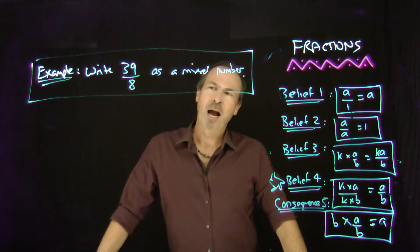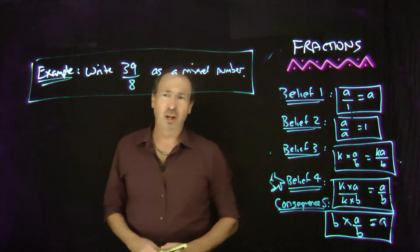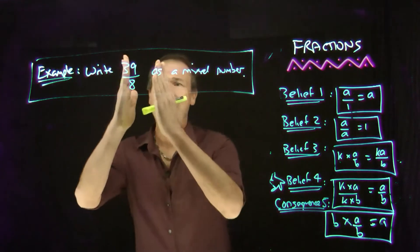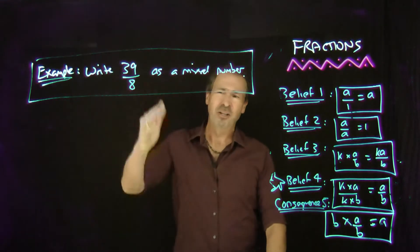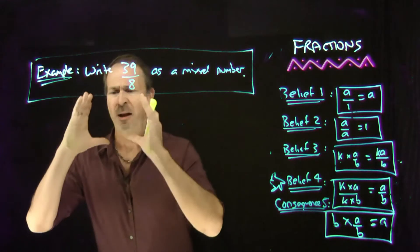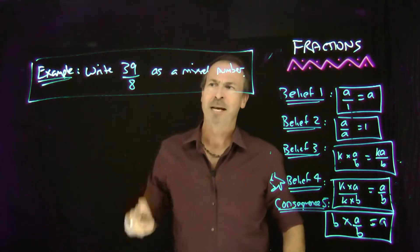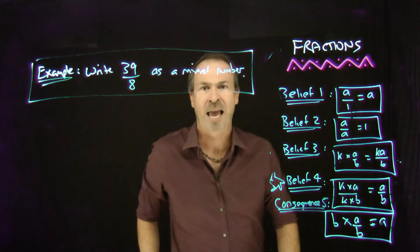Here's an example. Please write 39 eighths as a mixed number. Now the advantage of doing this actually, it gives me some intuitive feel for how big that number actually is. Right now I don't really have a sense of the size of 39 eighths. Mixed numbers actually provide some intuition about how big a number like that actually is.